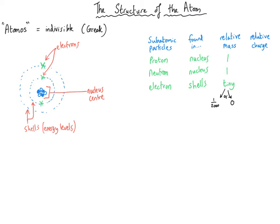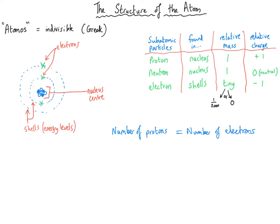Neutrons are neutral, which means they don't have any charge. Protons are positive — which is a nice alliteration to help you remember. And electrons are negative. So: protons positive, electrons negative, neutrons neutral. In atoms, you always find the same number of protons as electrons. Because they've got opposite charges, that means that overall atoms do not have any charge.